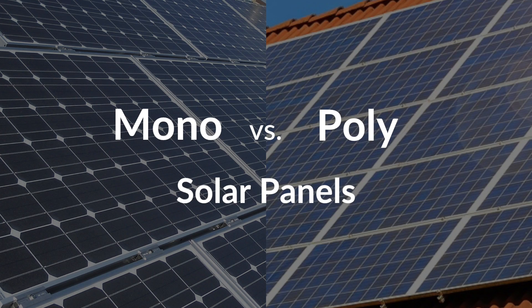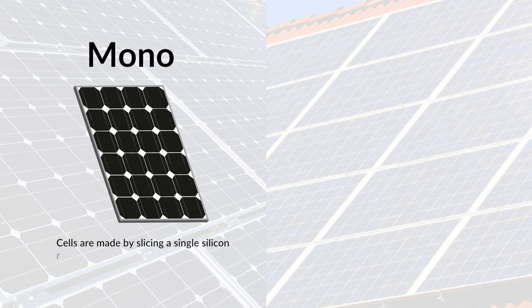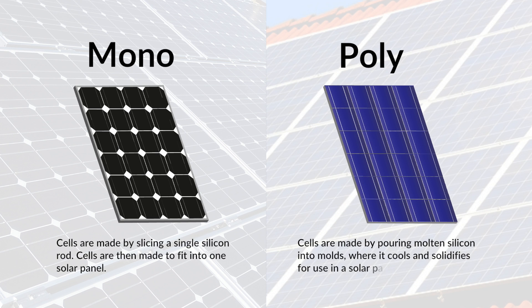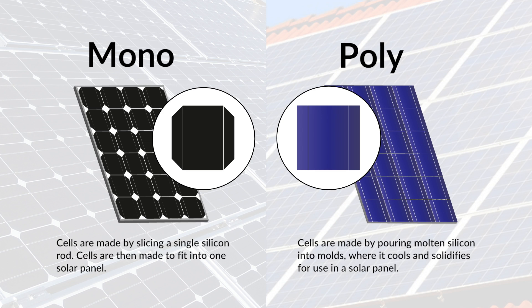There are several differences between mono and poly solar panels. Mono solar panels are made from a single silicon crystal, while poly are made from melting down crystals into cells. This creates a visual difference in the panels. Mono panels are typically darker than poly panels, but a coating can be added to poly panels, giving them a similar appearance to the darker mono panels.